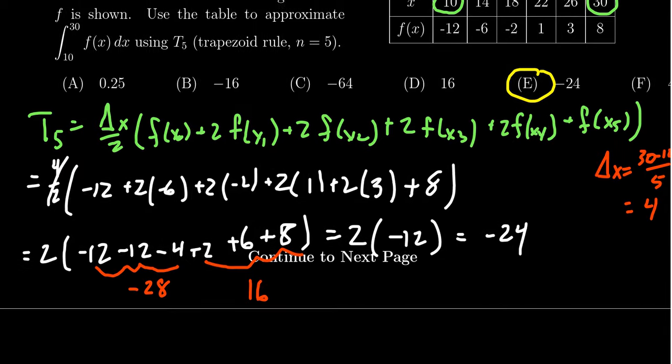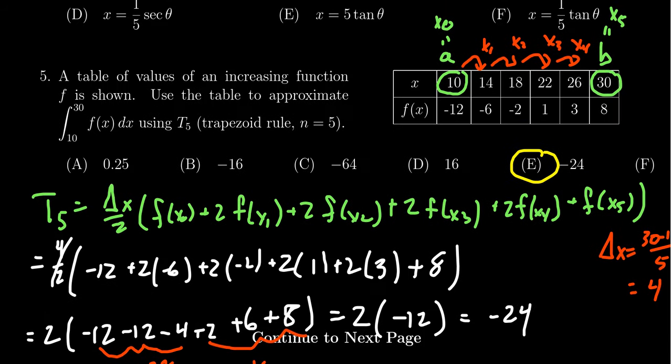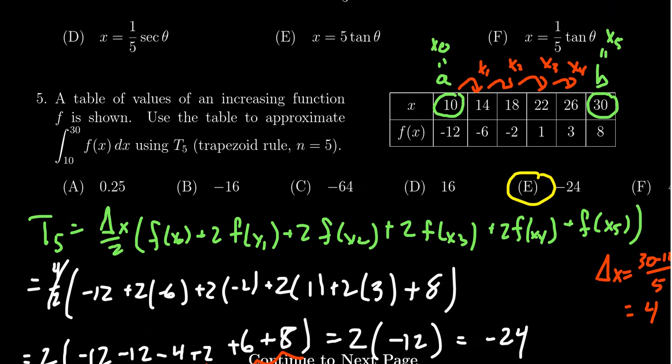And so on this question we did the function for T5, the trapezoidal rule. But on the test you could be asked to do this with the midpoint rule or the Simpson's rule. So using the same table I would actually recommend computing the midpoint rule or the Simpson's rule and see what you get there. You'll notice that some of those answers are listed as distractors on this one.